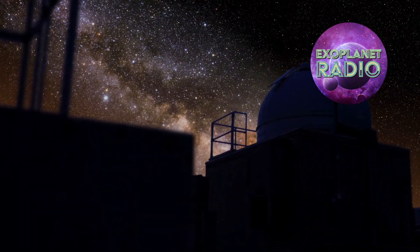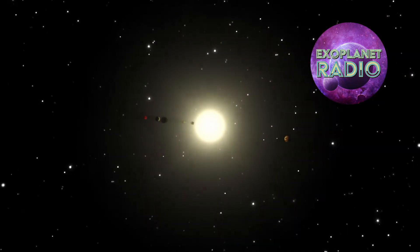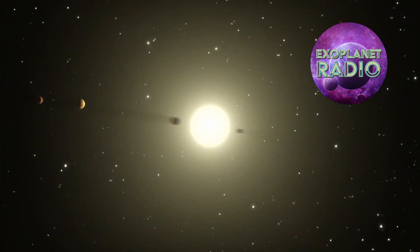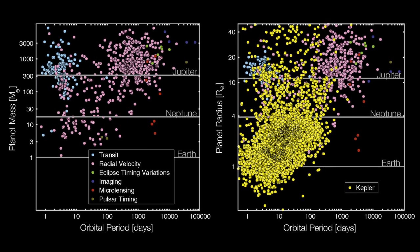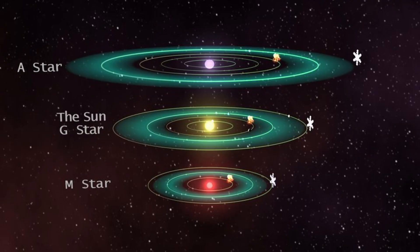In recent years, scientists have made great strides in the search for extraterrestrial life. They have discovered thousands of exoplanets, and some of them are located in the habitable zone of their star, which means that liquid water could exist on their surface and is essential for life as we know it.